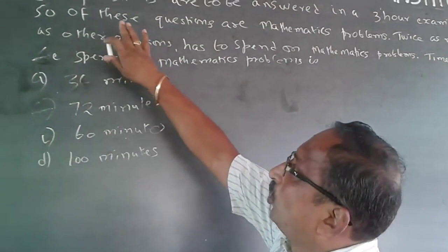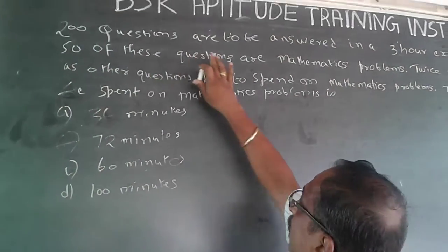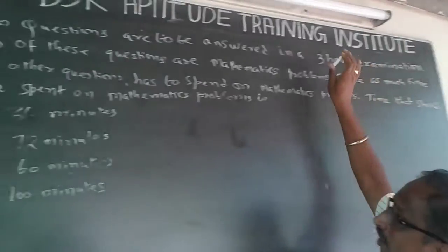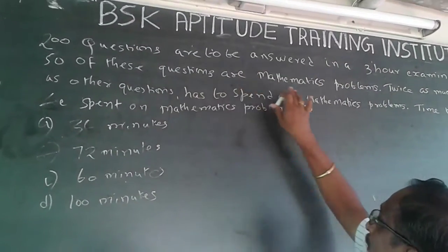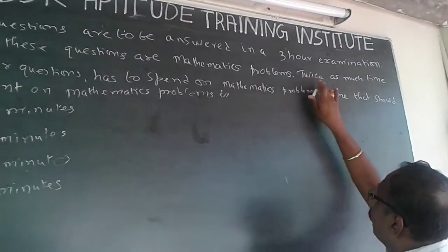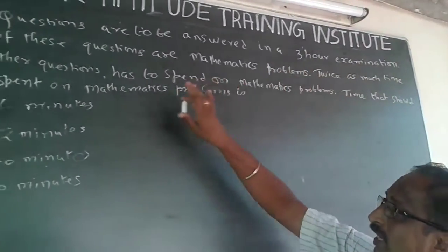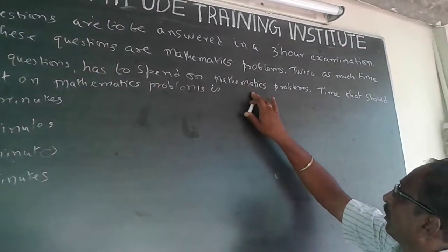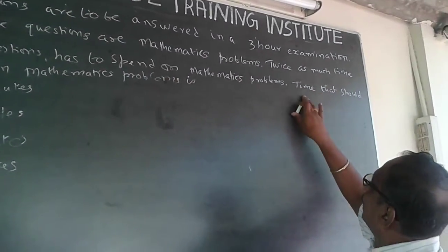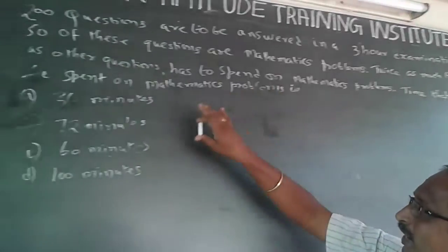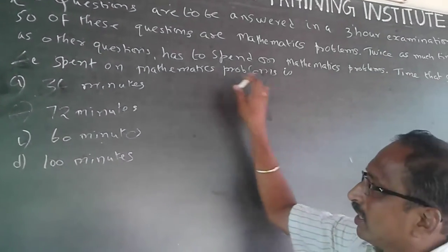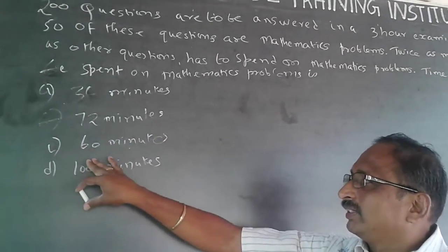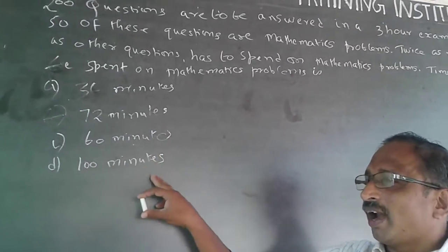The question: 200 questions are to be answered in a three-hour examination. 50 of these questions are mathematics problems, and twice as much time as other questions has to be spent on mathematics problems. The time that should be spent on math problems is: a) 36 minutes, b) 72 minutes, c) 60 minutes, d) 100 minutes.